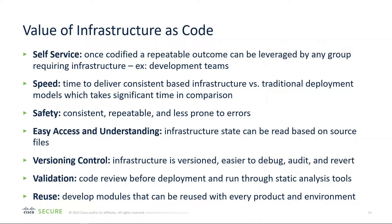The value of infrastructure as code includes self-service: once codified, its repeatable outcome can be leveraged by any group requiring infrastructure — we can pass this off to development teams to drive specific outcomes. Speed: the time to deliver consistent infrastructure is far less than the traditional model. Safety: consistent, repeatable, and less prone to errors. Easy access and understanding: we can read the configuration files to understand what the infrastructure looks like. Version control: infrastructure has versions assigned so we know what state we're in, and we can debug more easily, audit, and revert if something goes wrong.